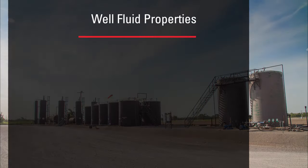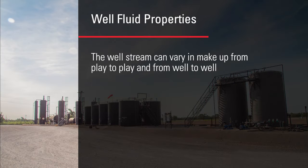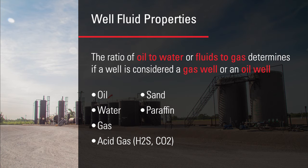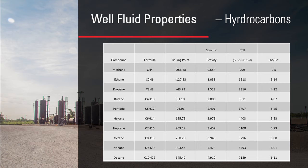An oil well is not just producing oil. The well stream can vary in makeup from play to play and from well to well. This is a list of what may be found in an oil well stream. The ratio of oil to water, or fluids to gas, determines if a well is considered a gas well or an oil well. This chart shows a breakdown of different hydrocarbon properties, which can aid or hinder in the separation process.